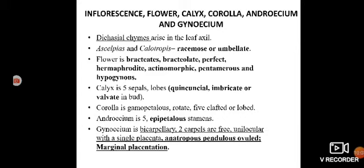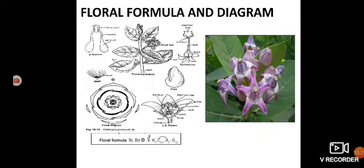Stamens are epipetalous; stamens are connected to the corolla, represented by an arch in the floral formula. The gynoecium is bicarpellary. The floral formula is similar to Apocynaceae: Br, Brl, actinomorphic, hermaphrodite, K5, C(5) with arch, A5 with arch (epipetalous), G2 — ovary superior.